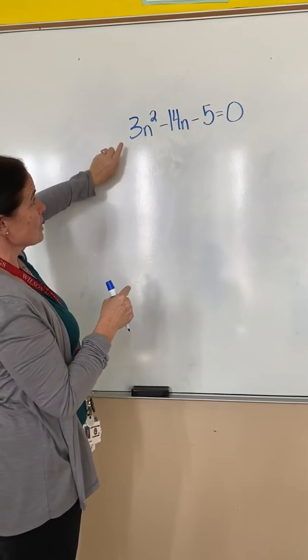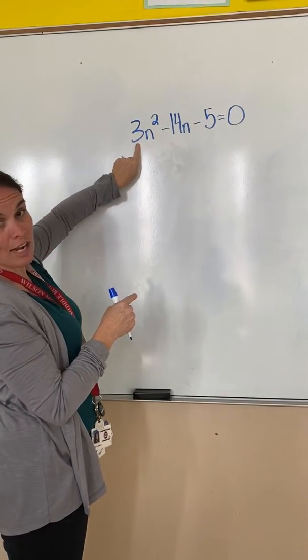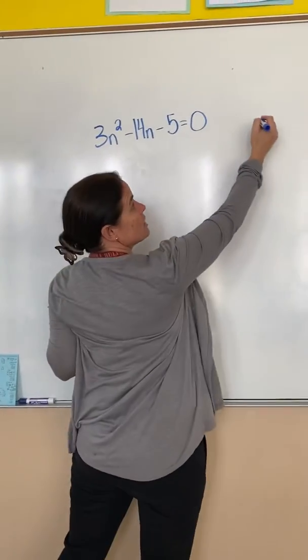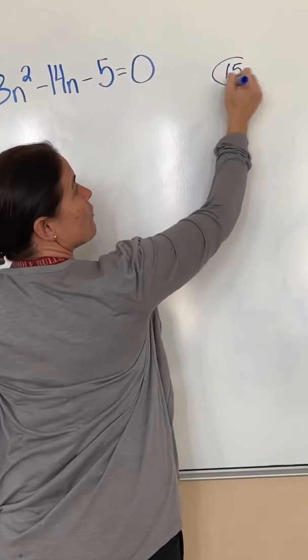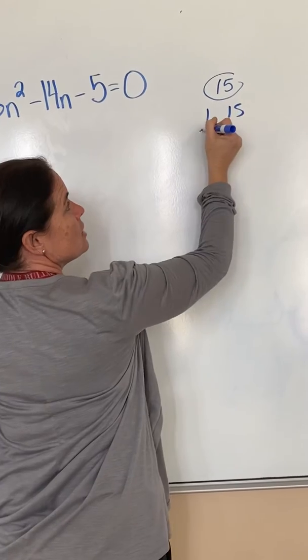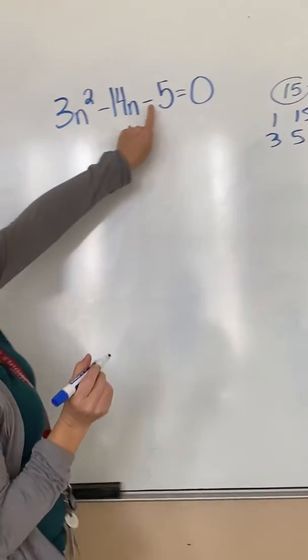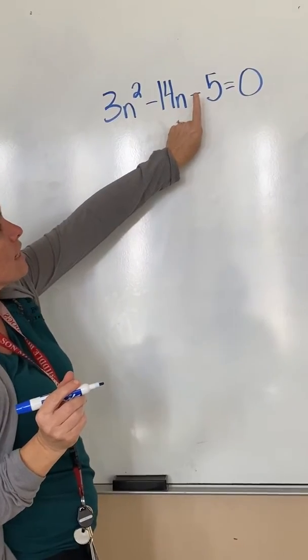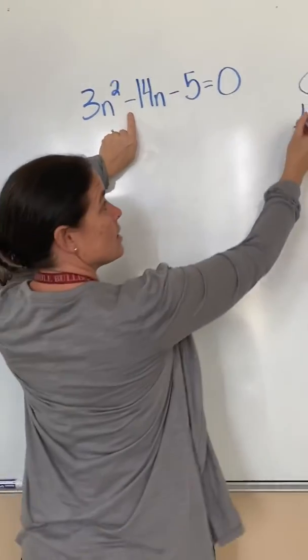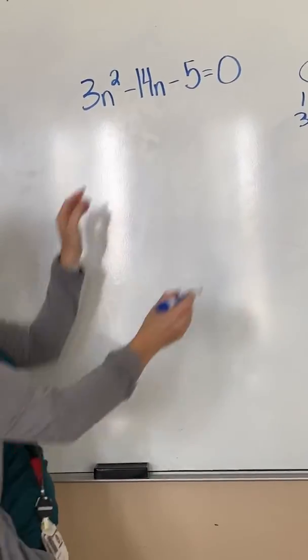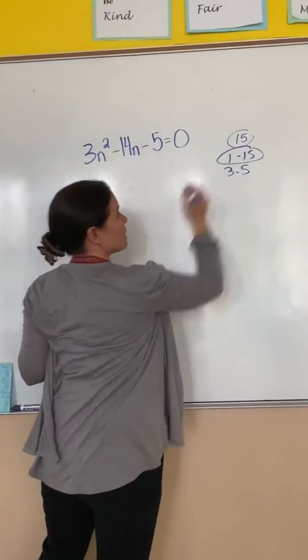So to solve this by factoring, because there's a number here, I have to multiply a times c, so 3 times 5 is 15. I have to do this the long way. The factors of 15: 1 and 15, 3 and 5. This tells me my signs are different, and the bigger one is negative, so which combination is going to get me to negative 14? It's going to be this one right here.